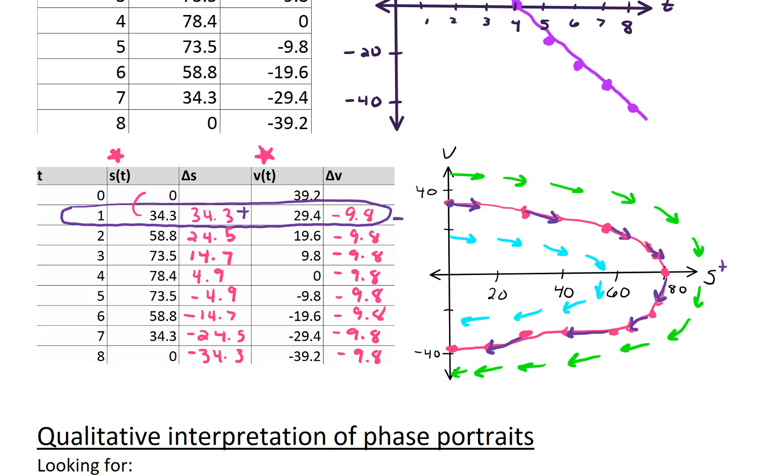There's also an equilibrium point, which is don't throw the ball at all. It will stay on the ground and it won't move. But as soon as you start to throw the ball with a little bit of velocity, it will go up and come back down.